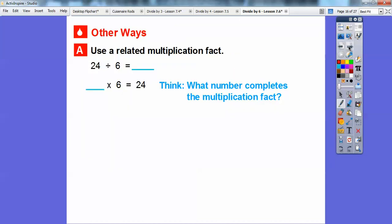Using related multiplication facts with the same problem: if we're given 24 divided by 6, we can think of this as what number times 6 equals 24? Once we know that 4 times 6 equals 24, we know that 24 divided by 6 equals 4.